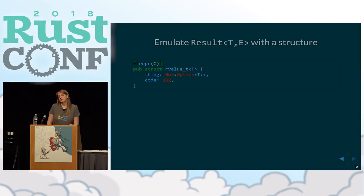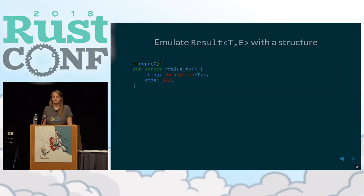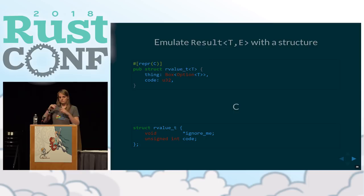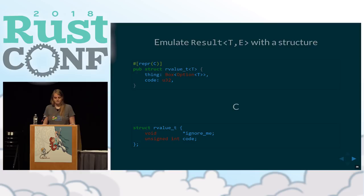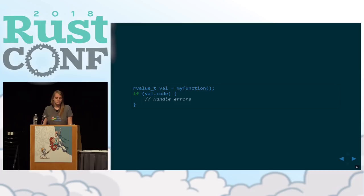We can emulate a Result in C. This is a Rust struct — we have a struct over a generic T, and we have a Box in there so that C doesn't have to understand how big the thing is, because in the end it's just a void pointer. We can mark that field as opaque. As long as the structure knows there's a pointer in there that points to something, it doesn't have to care about the type. This way you can deal with returning an error code when it's convenient.